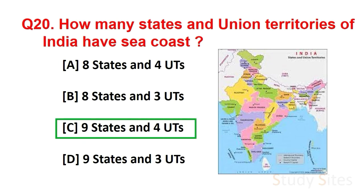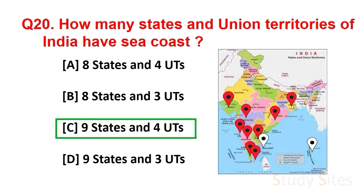The 9 coastal states are Gujarat, Maharashtra, Goa, Karnataka, Kerala, Tamil Nadu, Andhra Pradesh, Odisha and West Bengal. And the union territories are Andaman and Nicobar Islands, Puducherry, Lakshadweep and Daman and Diu.